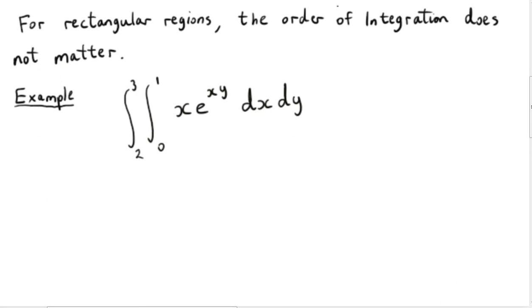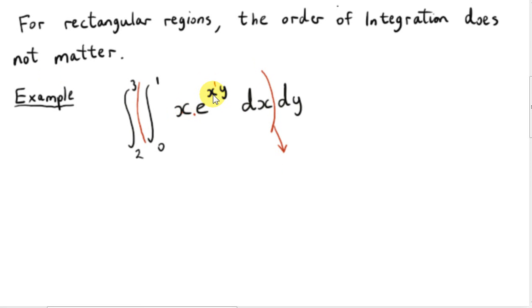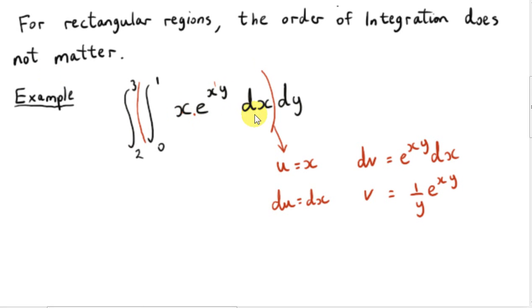In this next example, the inner integral involves integrating xe to the power of xy with respect to x. We have a product of functions involving x, and as seen in previous videos, we need integration by parts. Since x to the power of 1 appears in the power of the exponential and also separately, substitution won't work. However, if we reverse the order of integration, we get a much easier way of solving this double integral.